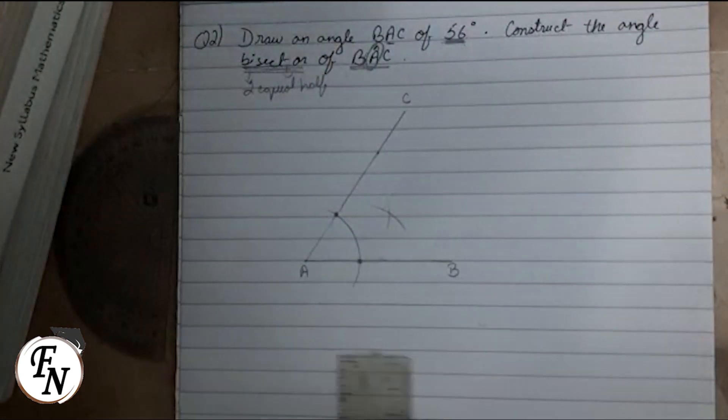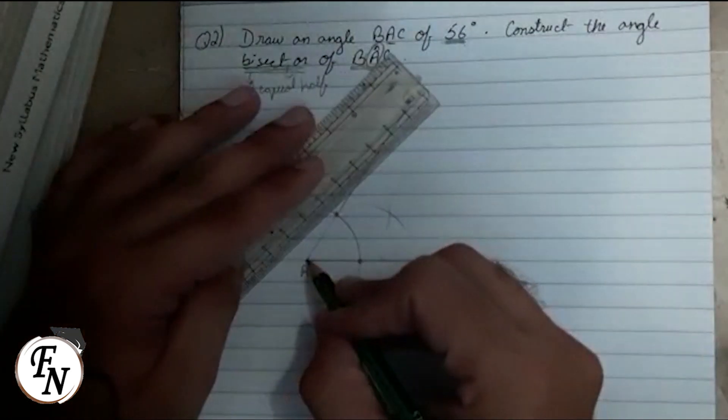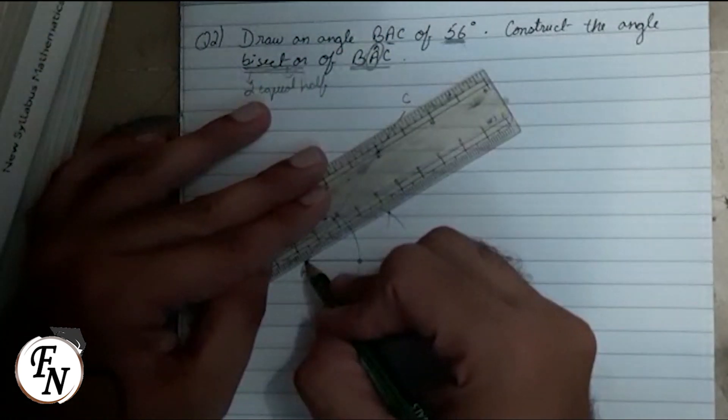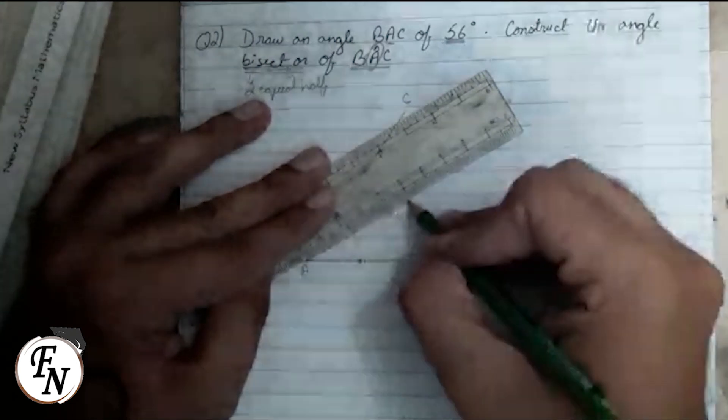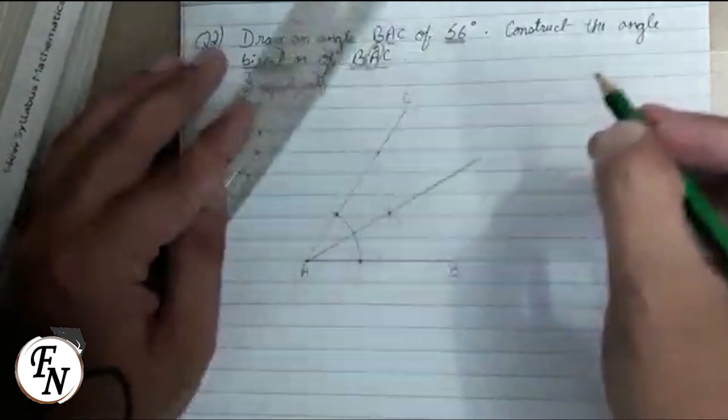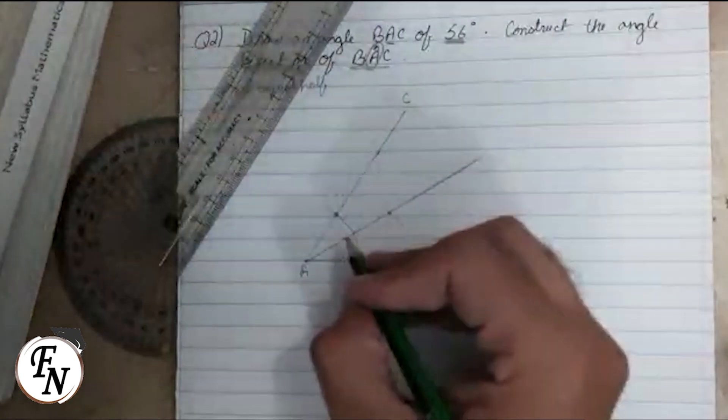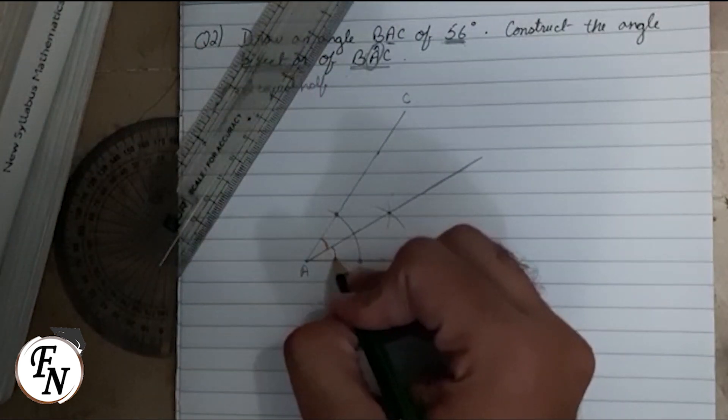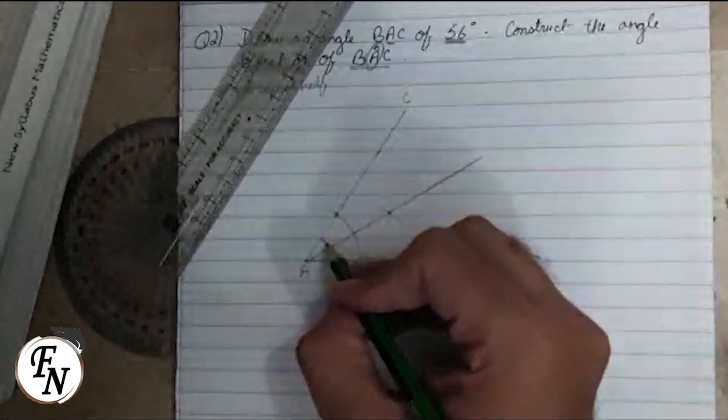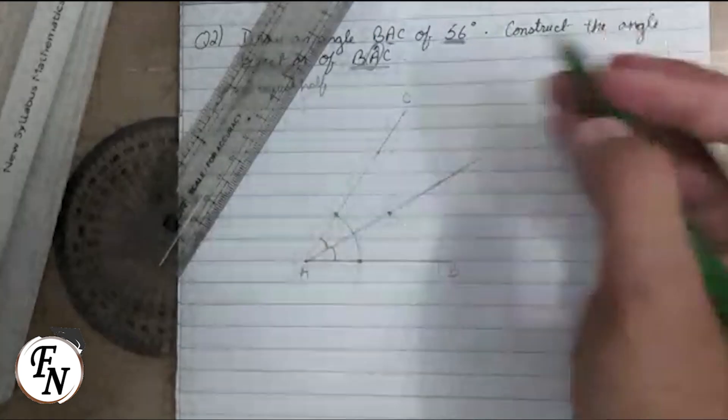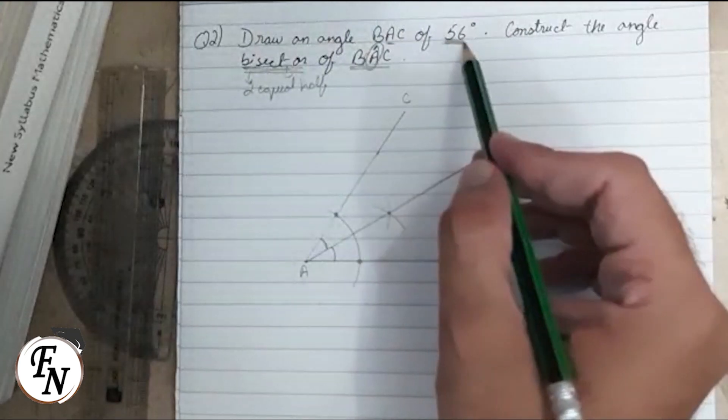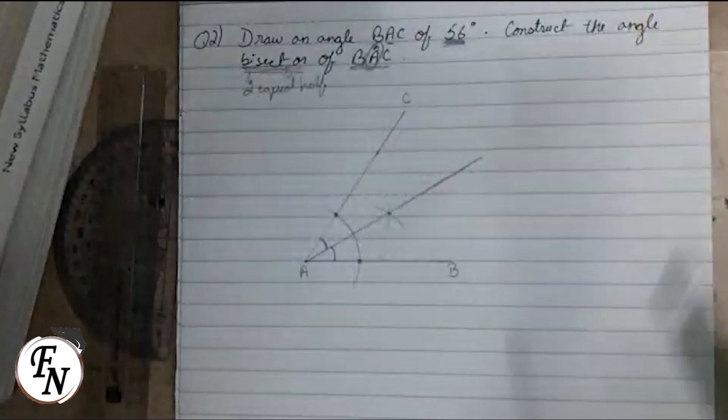Now with the help of a scale, join point A and this intersection point. This is how you will obtain the bisector of the angle. This divides it into two equal halves. This is how we can obtain an angle bisector of any given angle. Thank you everyone.